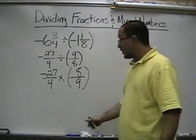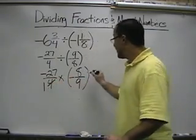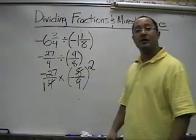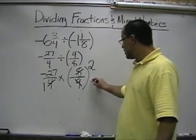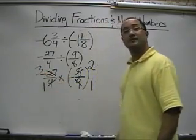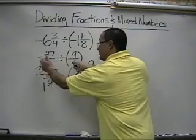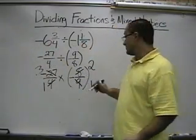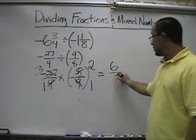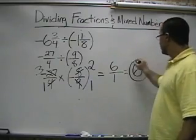Is there anything to cross-simplify? Yes — 4 and 8 can both be divided by 4: 4 becomes 1 and 8 becomes 2. And 9 and 27 can both be divided by 9: 9 becomes 1 and 27 becomes 3. Now we have simpler numbers. Both signs are negative, so our answer is going to be positive. 3 times 2 is 6, and 1 times 1 is 1, and 6 over 1 equals 6. That's our answer.